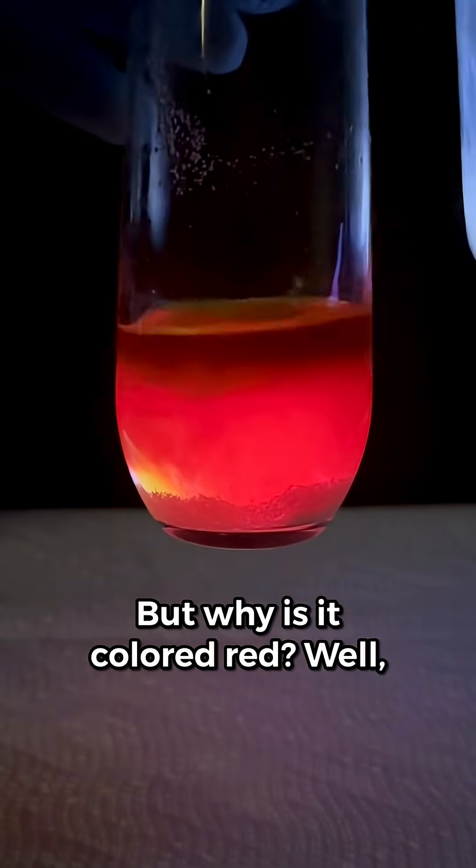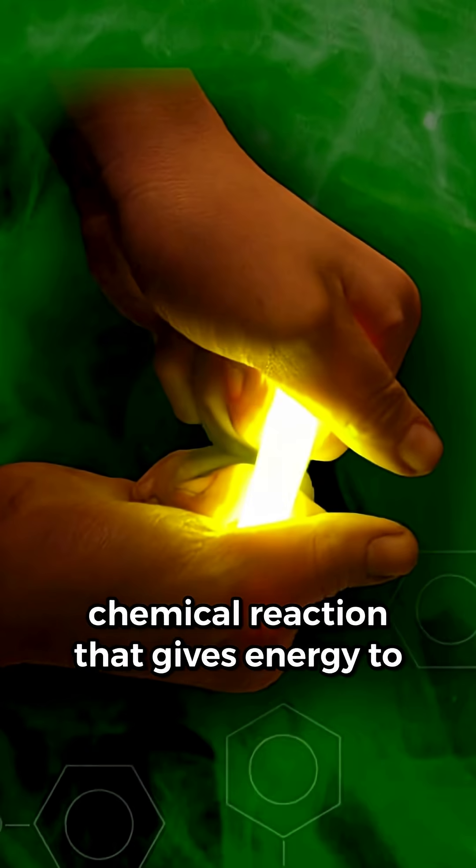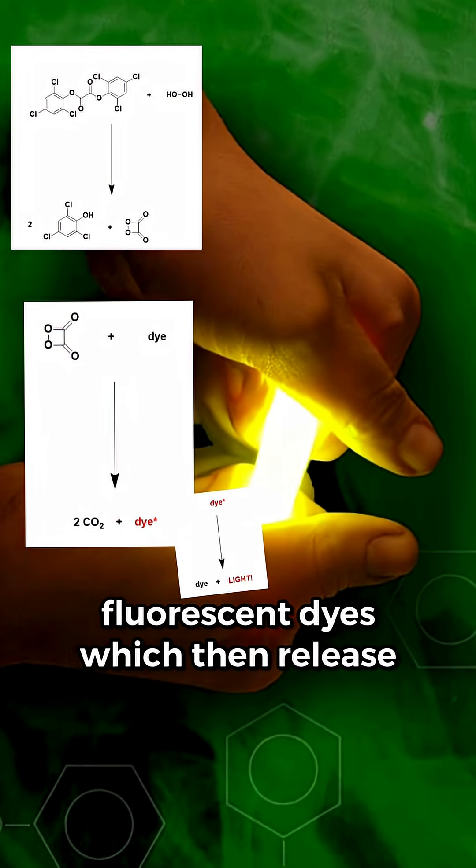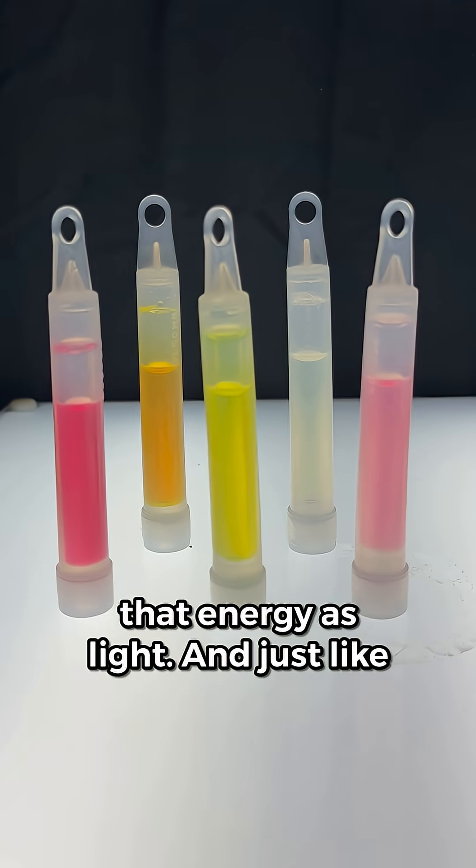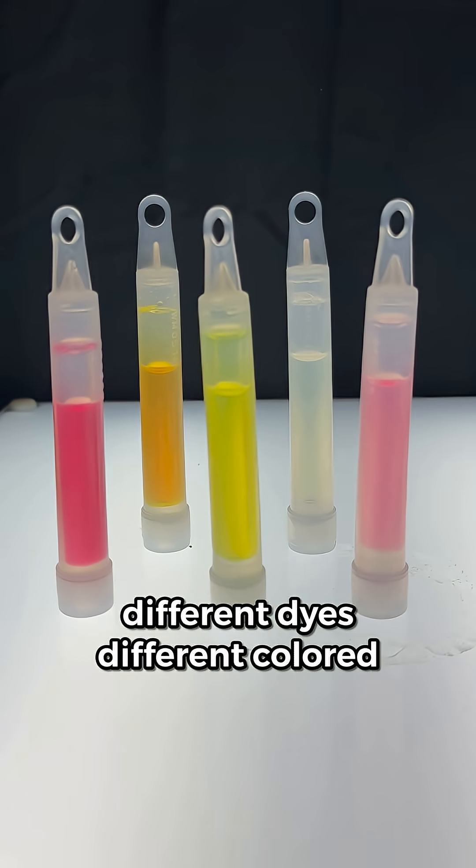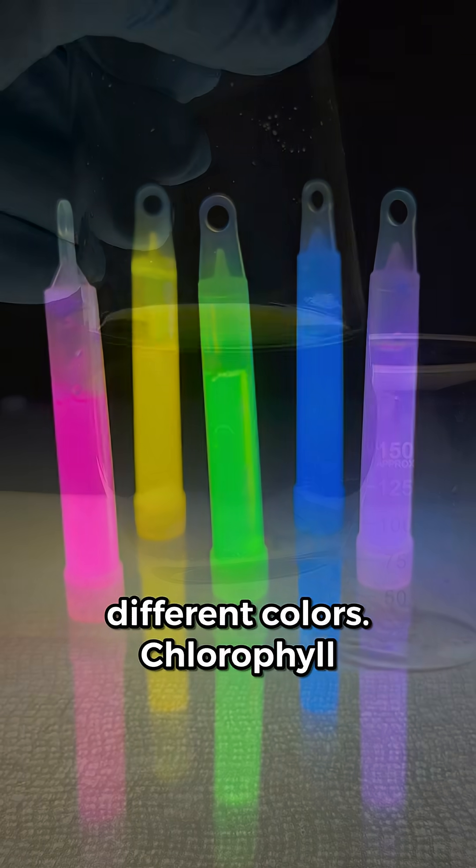But why is it colored red? Well, glow sticks are powered by a chemical reaction that gives energy to fluorescent dyes, which then release that energy as light. And just like different colored markers have different dyes, different colored glow sticks contain dyes that glow in different colors.